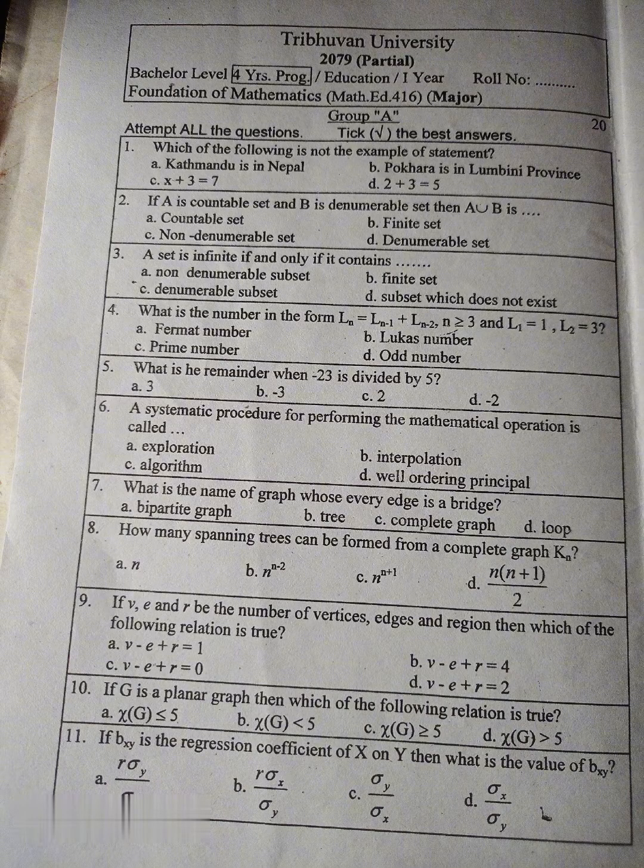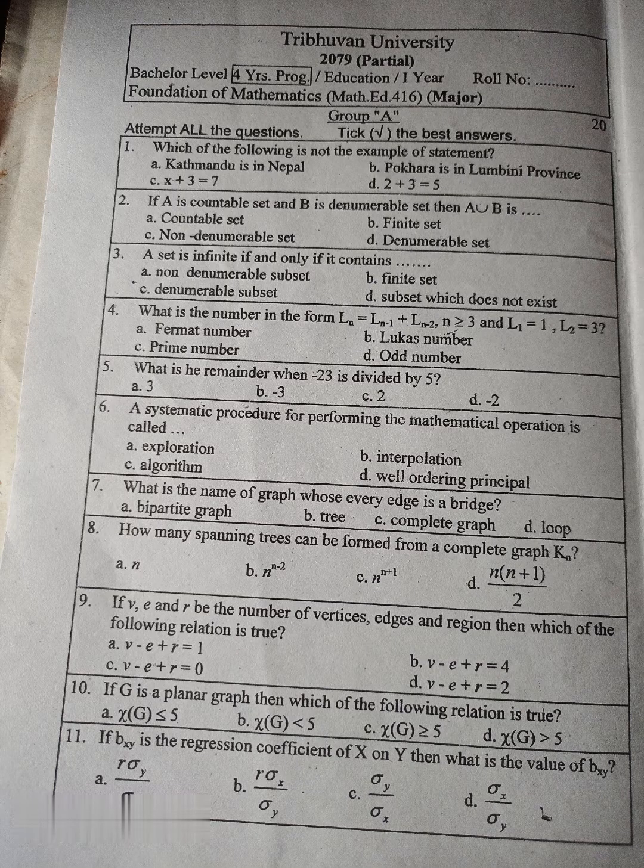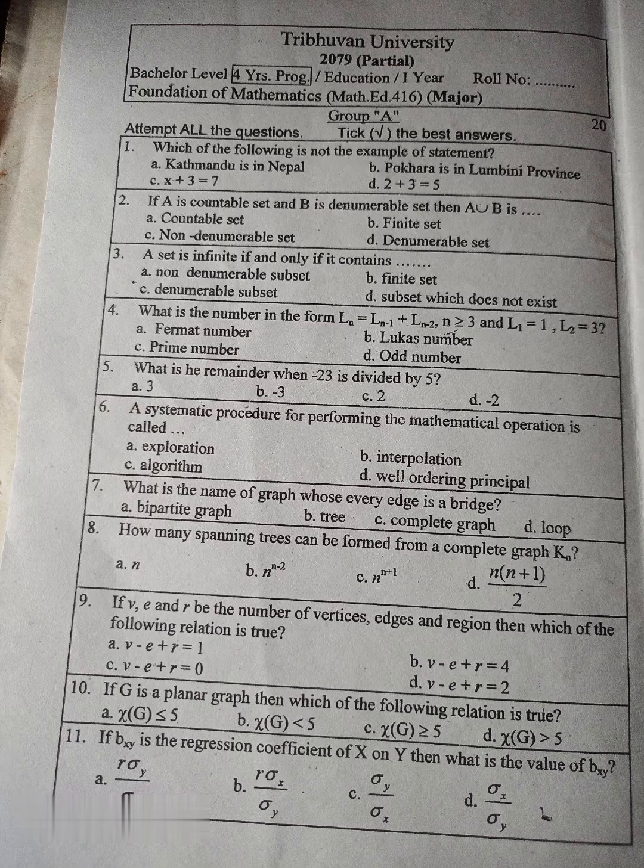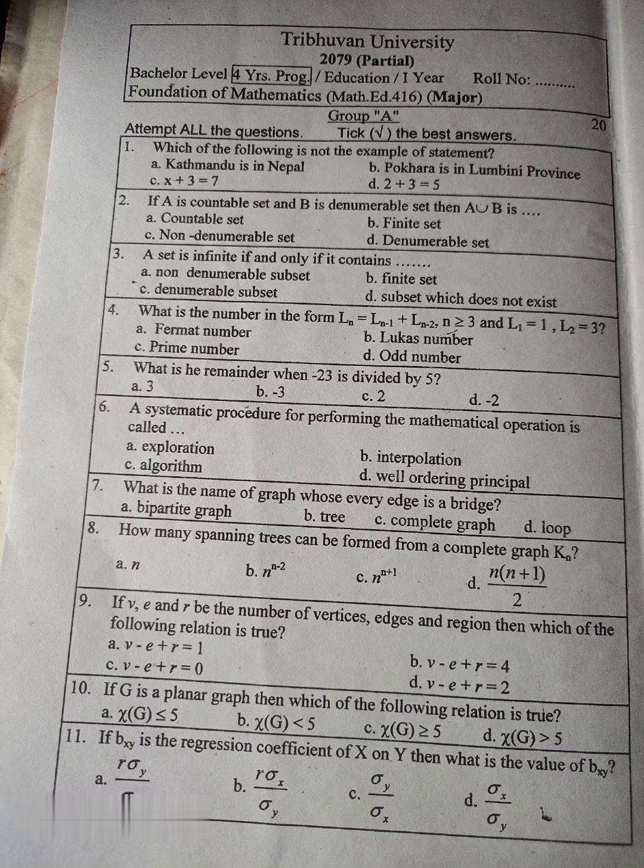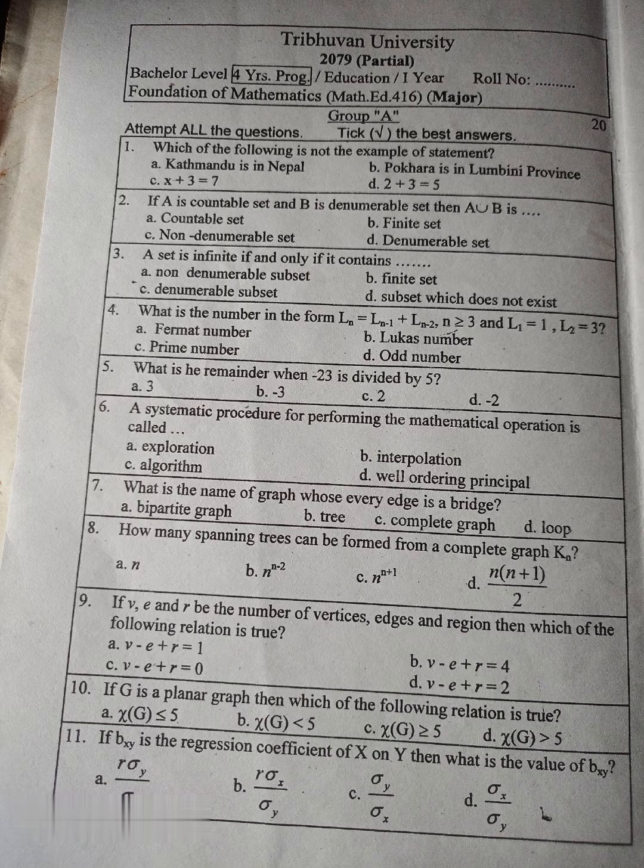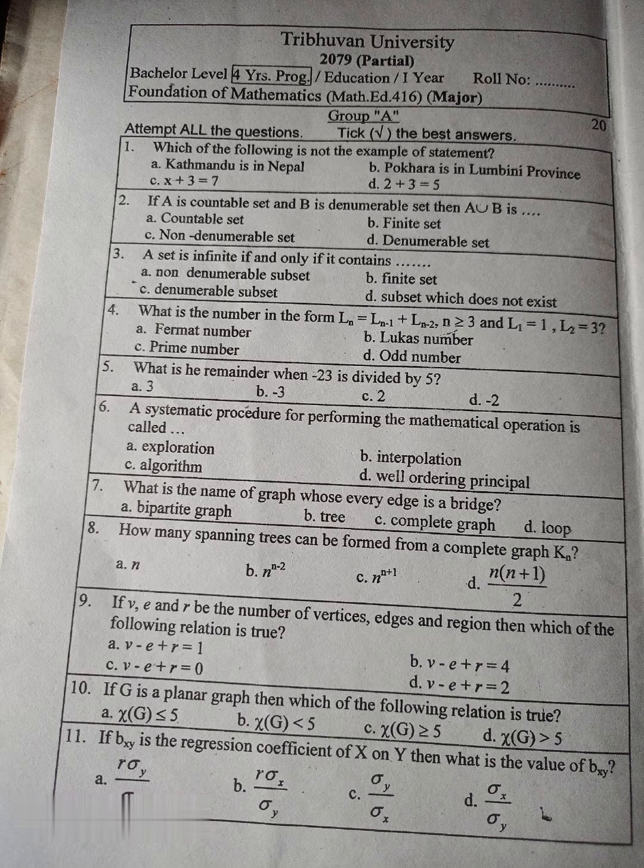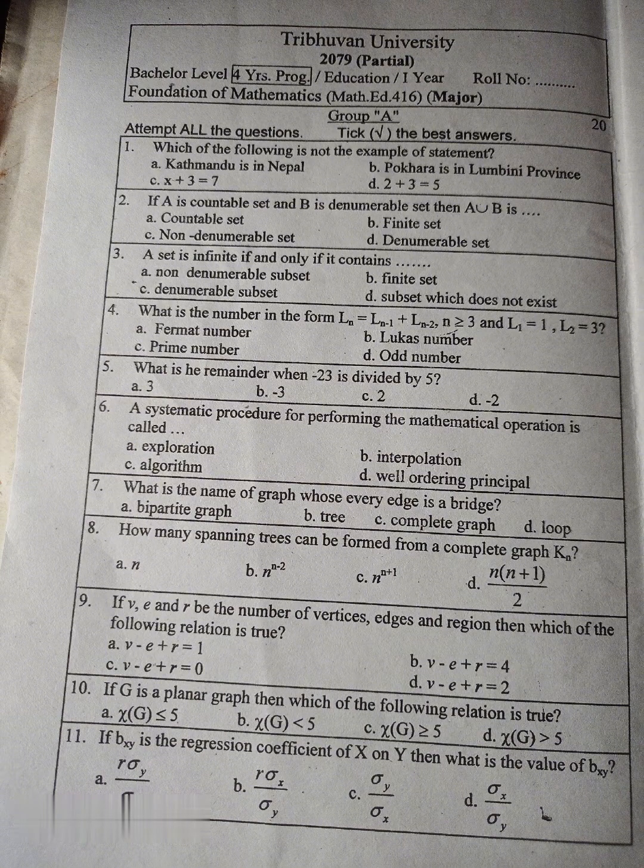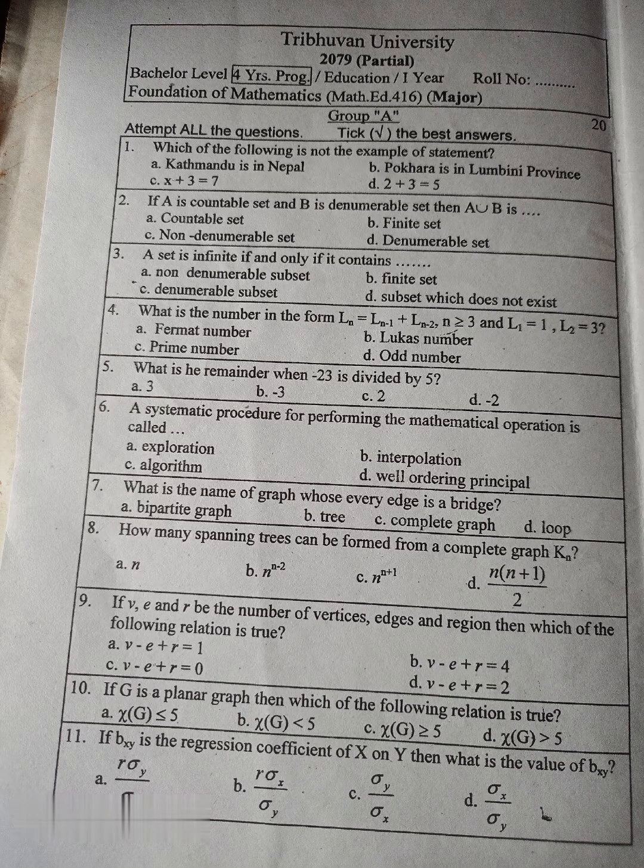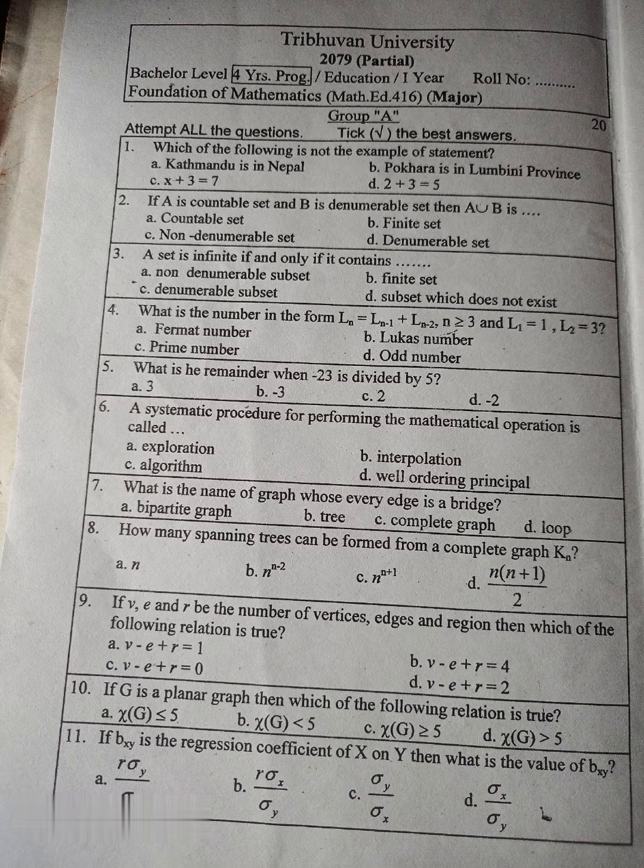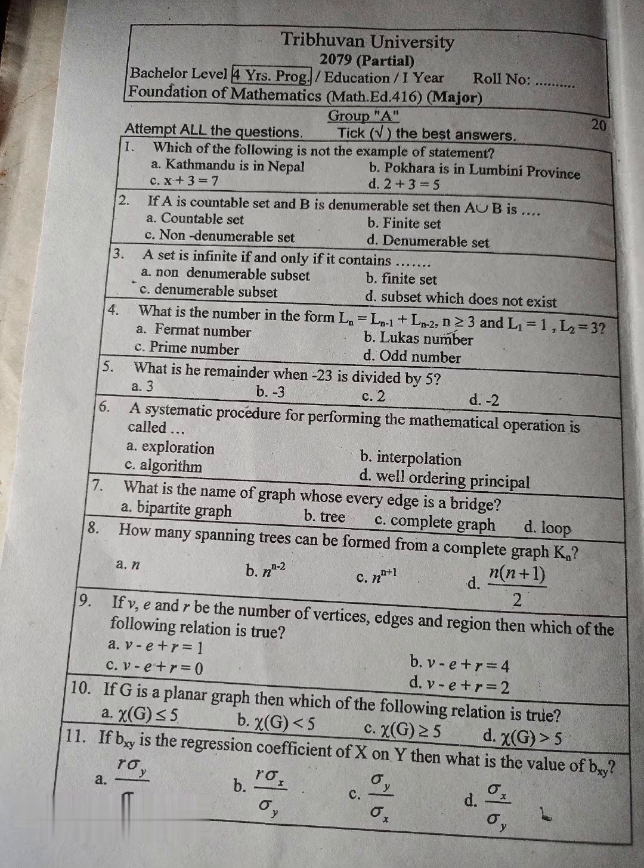Question number 10: If G is a planar graph, then which of the following relation is true? A. characteristic of G equal to 5, B. characteristic of G less than 5, C. characteristic of G greater equal to 5, D. characteristic of G greater than 5. Question number 11: If byx is the regression coefficient of Y on X, then what is the value of byx?